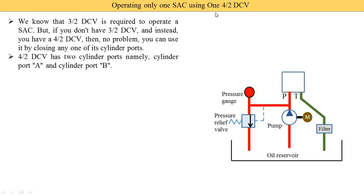Here we need to use the 4/2 DCV, meaning we need to draw 2 squares. The second digit is 2, meaning it has 2 positions — for 2 positions we draw 2 squares — and there are 4 ports. Here you see port P, port T, port A, and port B. During the first position, oil flows from P to A and B to T.